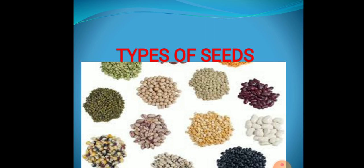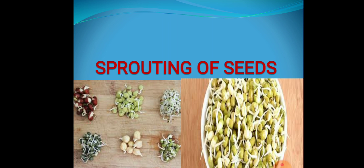And you have heard what is sprouting of seeds. In this picture you can see there are some seeds which are sprouted. The seeds after soaking are tied in a wet cloth and kept to sprout. Seeds like gram and moong are sprouted. Sprouted seeds are good for health and have good nutritive value.